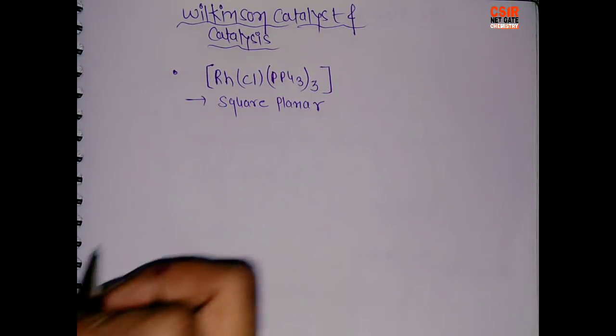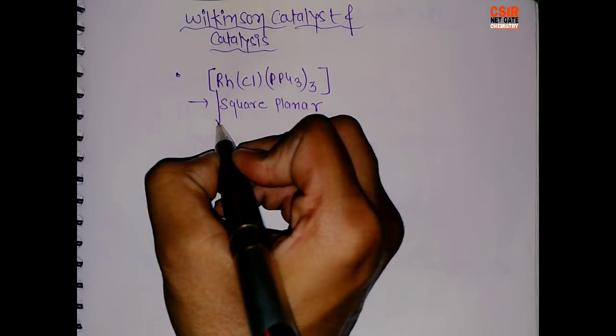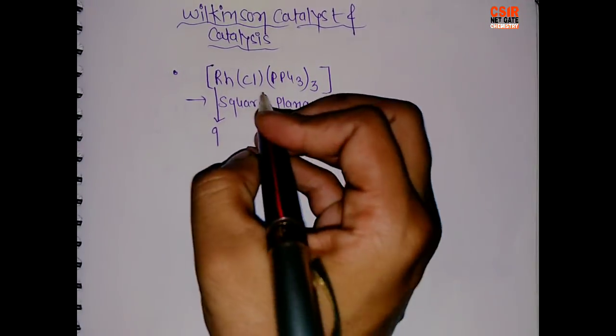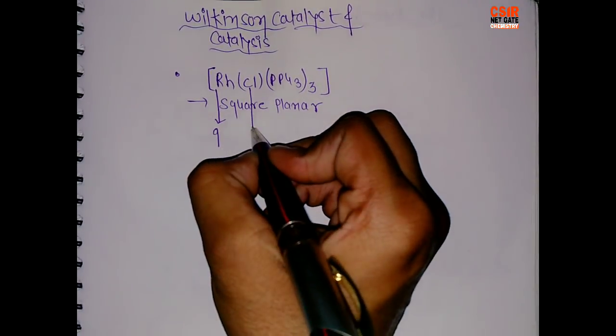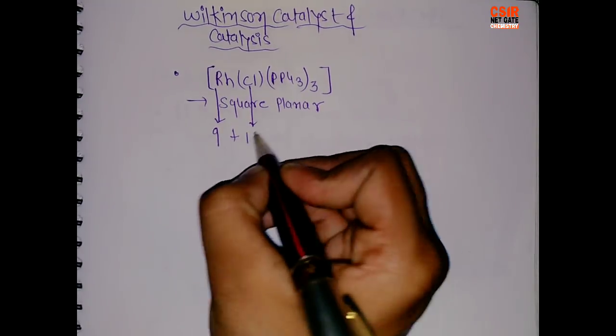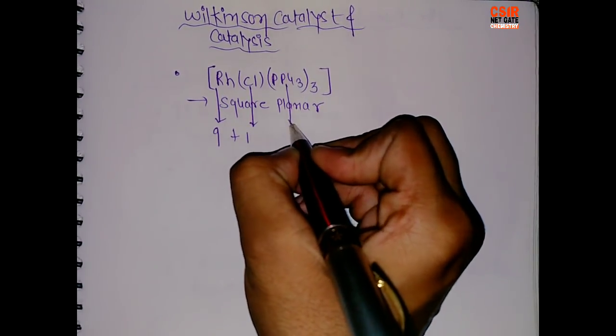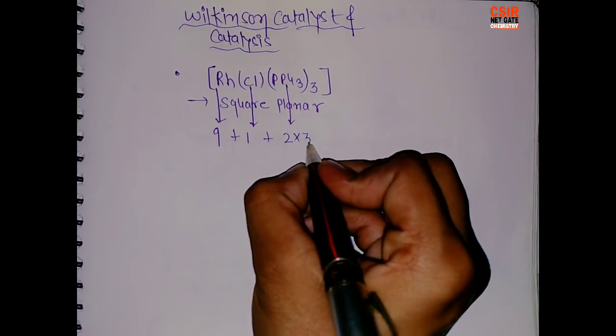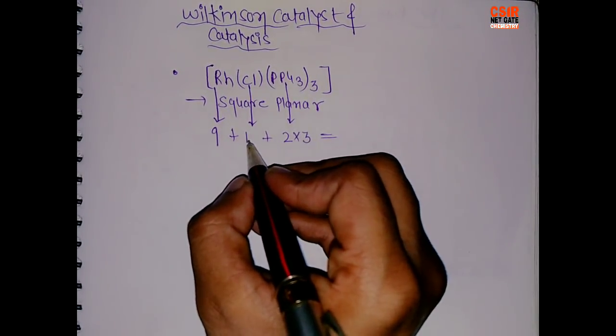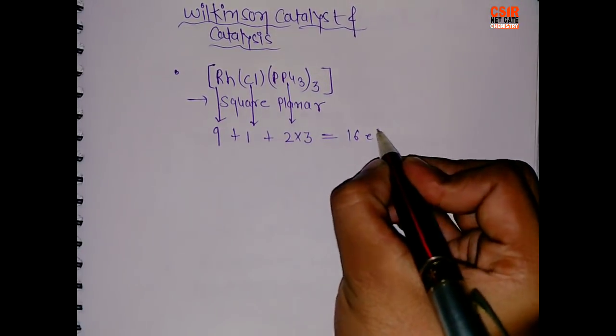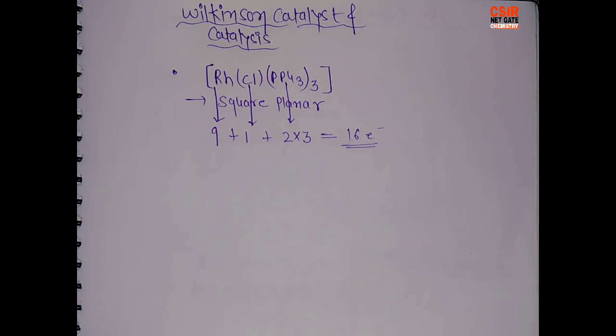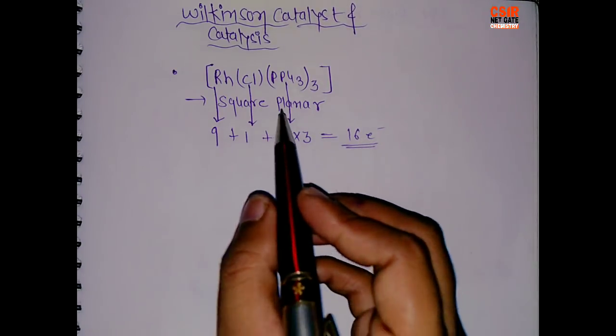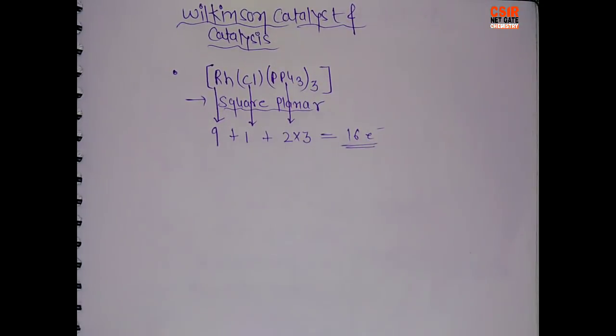Now electrons - rhodium has 9 electrons from the cobalt family. Chlorine has 1. And PPh3, phosphine ligand, is a 2 electron donor, but we have 3 units here. So this is 3 times 6 is 6, plus 1 is 7, and 9, total 16 electrons. As we generally know, catalysts are usually 16 electron species. So this is 16 electron and square planar.